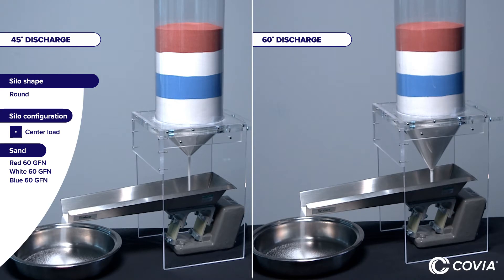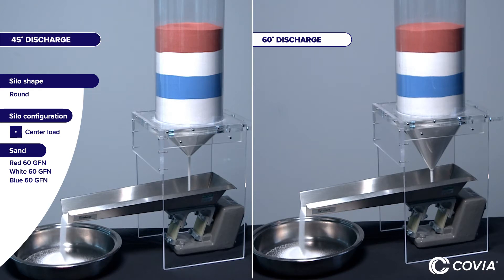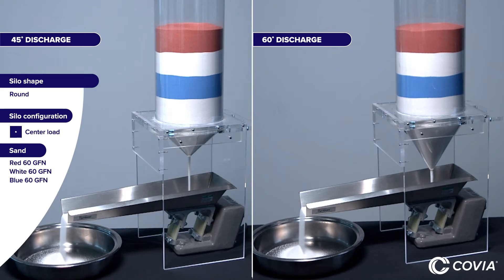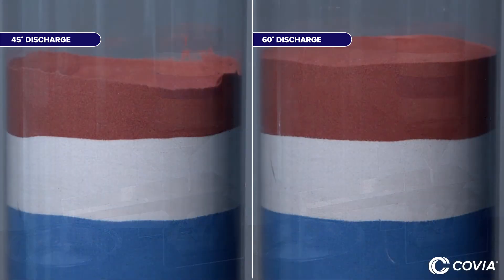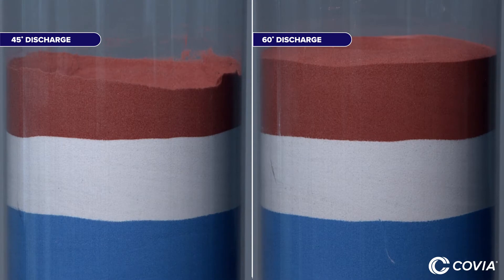This video demonstrates how silo configuration influences discharge sequence. The silos in these two demonstrations are exactly the same except that the silo on the left has a 45-degree discharge and the silo on the right has a 60-degree discharge. Both silos have been loaded with a 60 GFN sand which has been colored red, white, and blue.